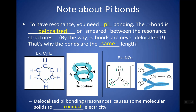Delocalized pi bonding and resonance can also allow electrons to provide conductivity. Something like graphite ends up having a lot of resonance, and having a lot of resonance can lead a substance to conduct electricity that you might not normally expect to conduct.